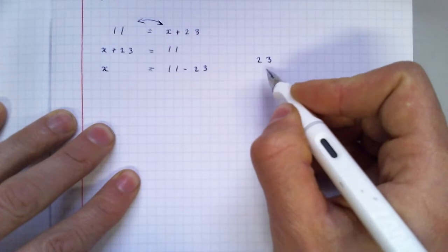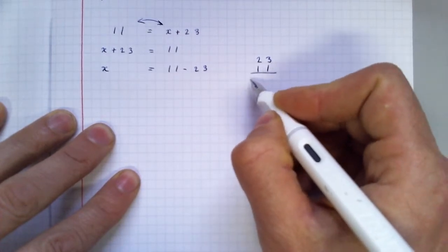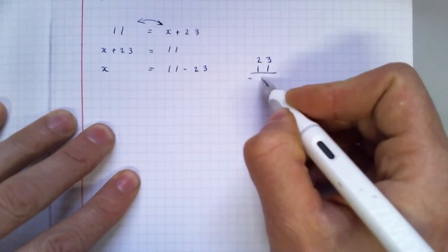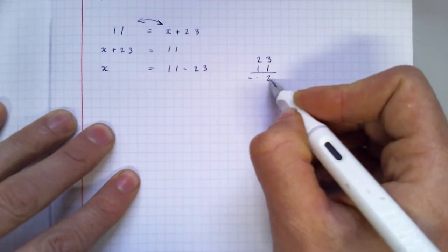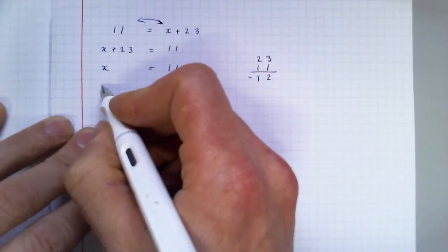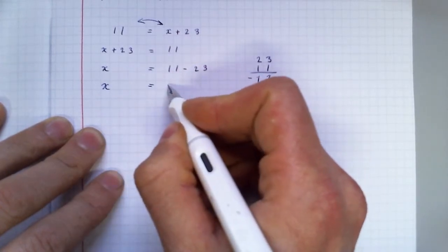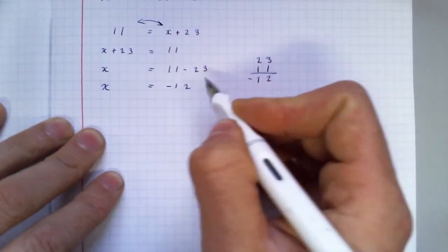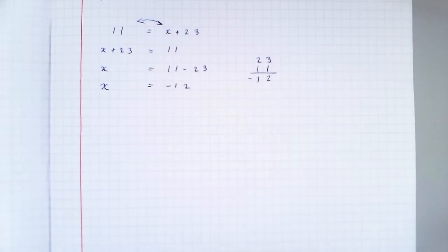So 23 minus 11. It's a minus number, isn't it? It's going to be minus 12. x equals minus 12. My letter is on its own and the job's done.